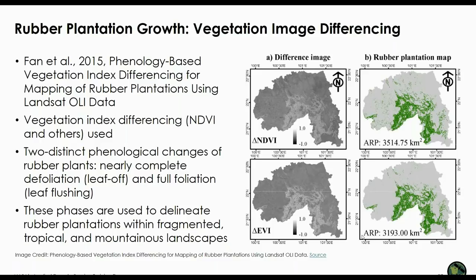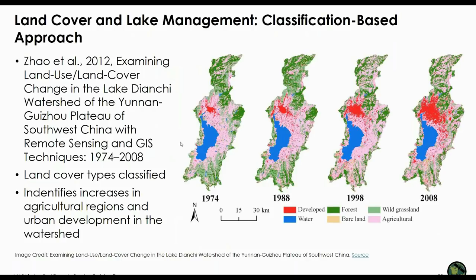This approach could then be used to look at the expansion of rubber plantations over time. This example shows the changing land use and land cover in a watershed in southwest China between 1974 and 2008. This study used the post-classification and comparison approach, which will not capture subtle change, but as you can see it does capture broad land cover changes, and it is also easy to quantify the changes with this approach.